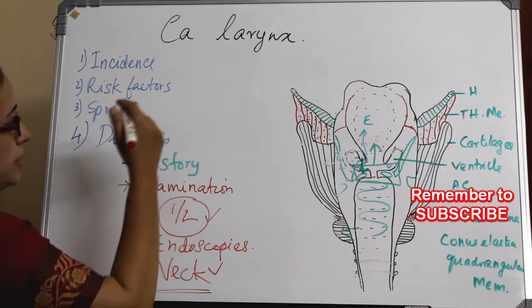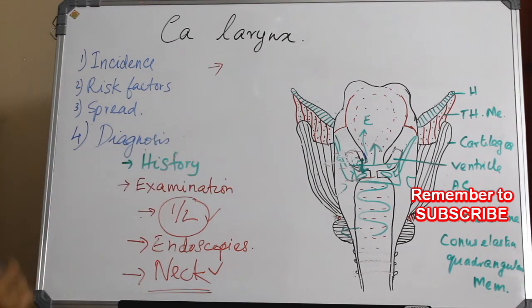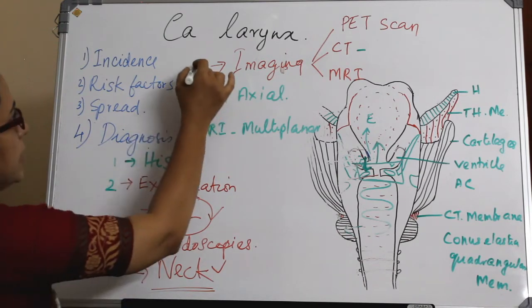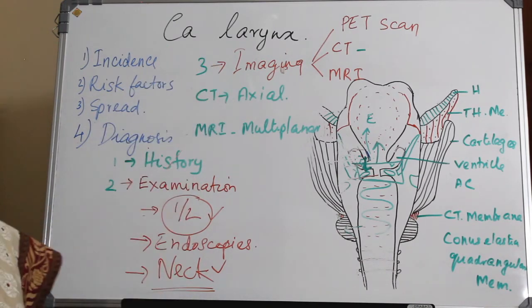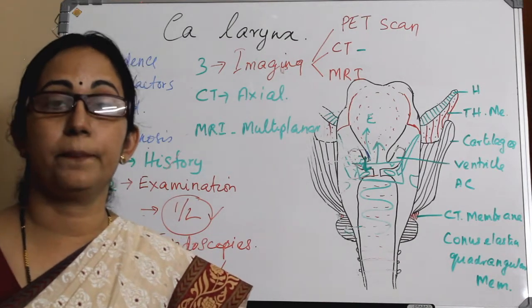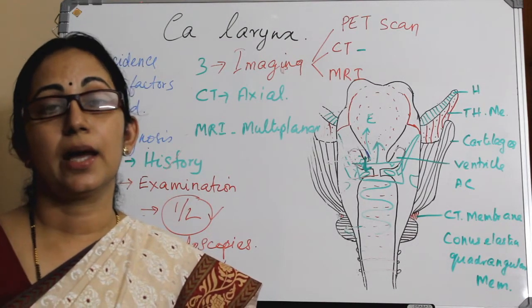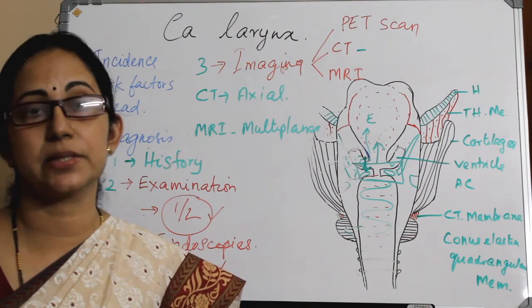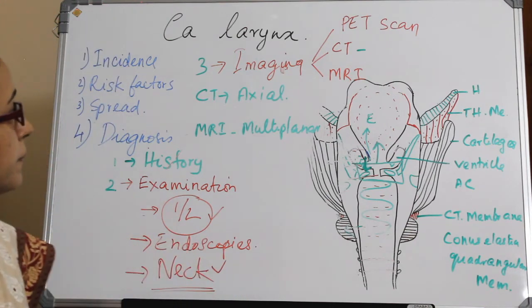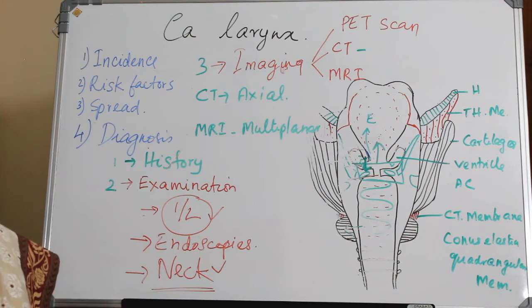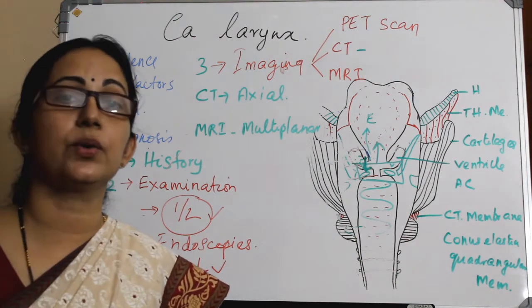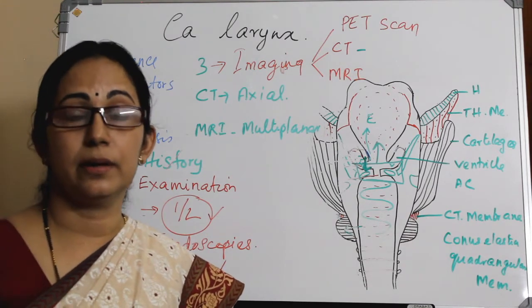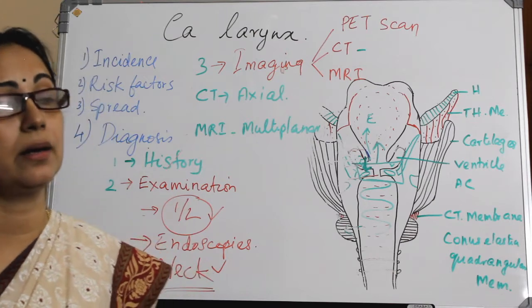The next diagnostic modality is imaging techniques. Of the imaging options, CT, MRI, or PET scan can be used. Remember that imaging technology cannot replace clinical examination, clinical findings, and clinical judgment. CT is usually taken in an axial plane, giving lateral as well as anteroposterior dimensions of the lesion, and is useful for assessing the pre-epiglottic and paraglottic space involvement.